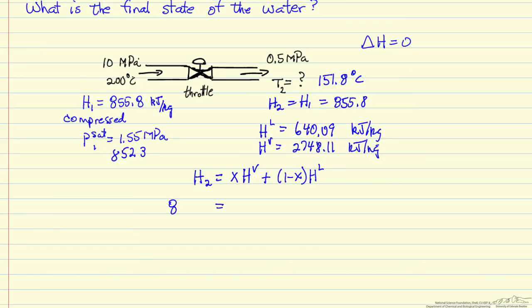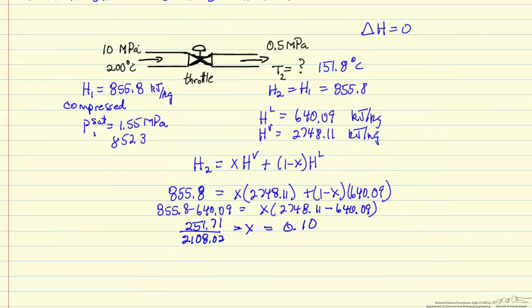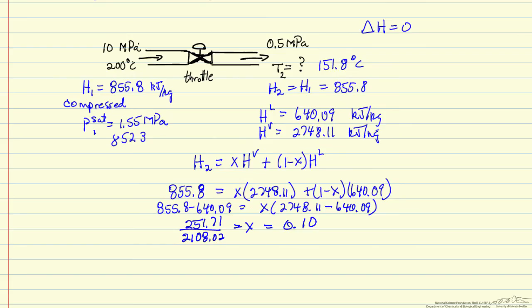And so the only number we don't know here is x, and so the fraction that is vapor is 0.1, so that means our exit stream is 10% vapor and 90% liquid at saturation temperature 151.8 degrees C.